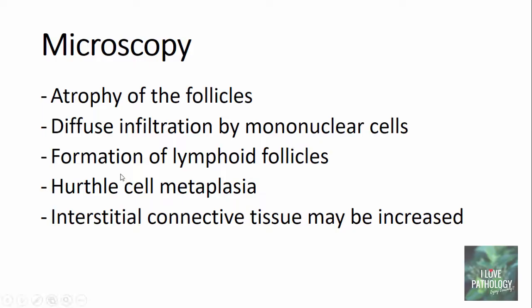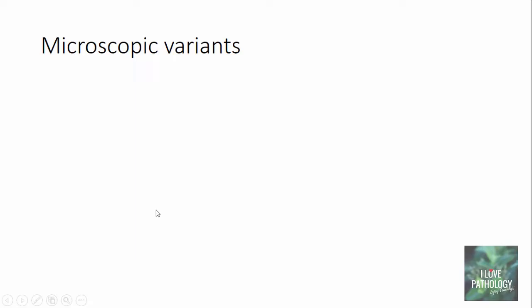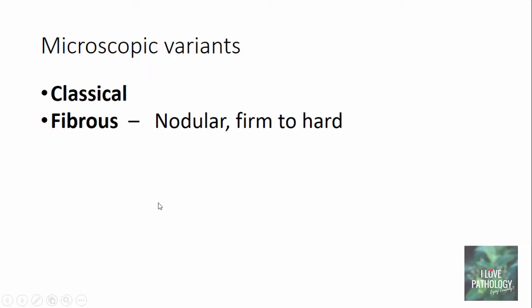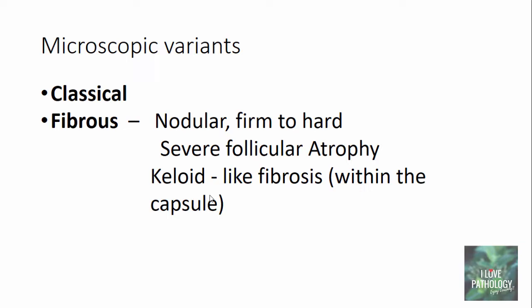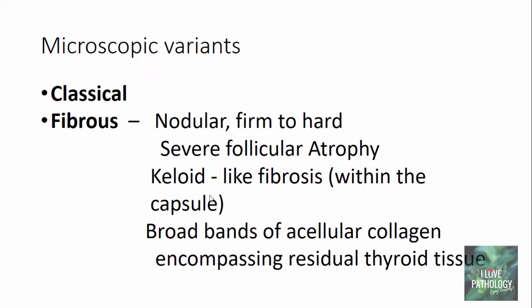To summarize the microscopic features: there will be varying degrees of atrophy of the follicles, diffuse infiltration of the parenchyma of the thyroid by mononuclear cells, formation of lymphoid follicles sometimes with prominent germinal centers, and the characteristic feature is the presence of Hürthle cell metaplasia. There may also be increased interstitial connective tissue. There are variants of Hashimoto's Thyroiditis — the classical form described, and a fibrous variant where the thyroid is nodular to firm with severe follicular atrophy and keloid-like fibrosis within the capsule, with broad bands of acellular collagen encompassing the residual thyroid tissue.